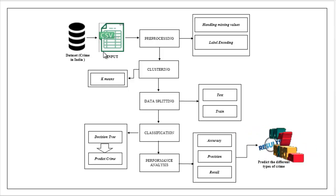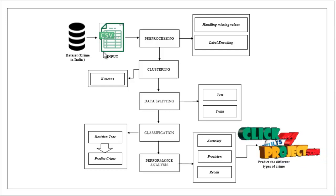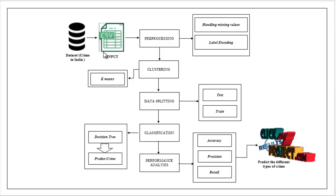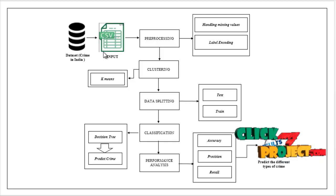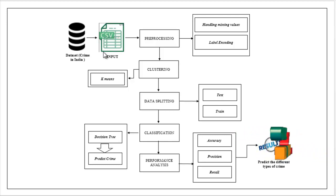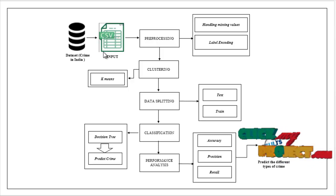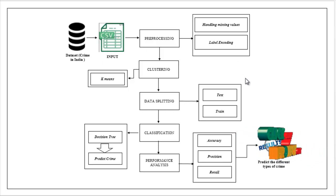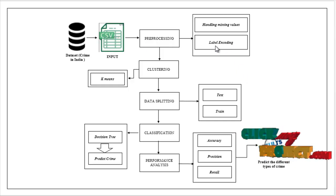After selecting the input data, we carry out the preprocessing step. Here we handle missing values — we check for any missing values in our dataset, and if there are any, we replace them with zeros. Then label encoding: we convert string values into numeric integer values.